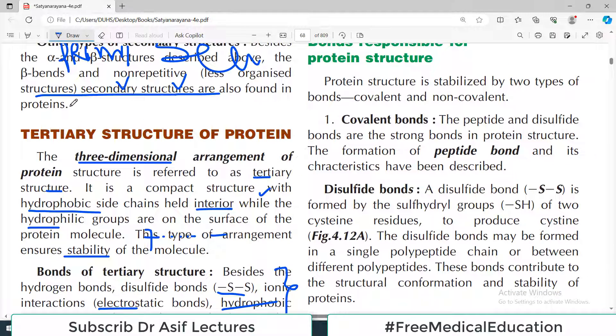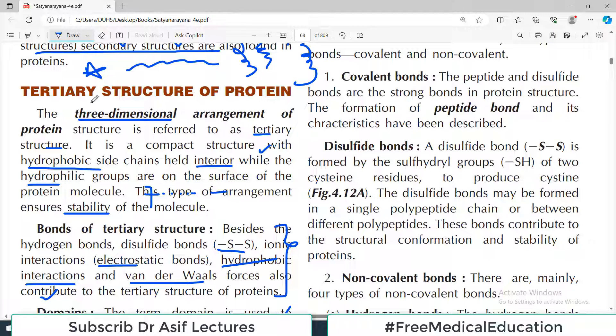So basically, the simple meaning of tertiary structure of protein is: primary linear structure, then the helical or sheet structure, and then the three-dimensional structure where domains are formed. The three-dimensional structure is known as the tertiary structure.